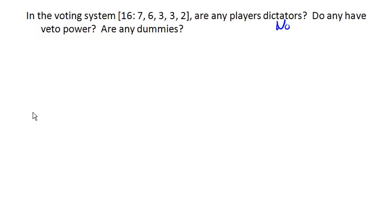To see one that does have a dictator, consider this case where we have a quota of 10 and the individual players have weights of 11, 2, 2, 2, something like this. In this case, player 1 all by themselves can reach quota, and so player 1 gets to make all the decisions. Player 1 is a dictator in that voting system.